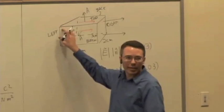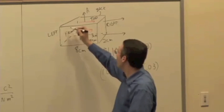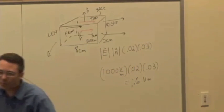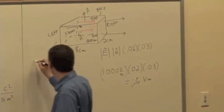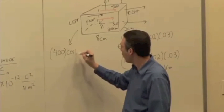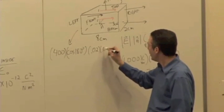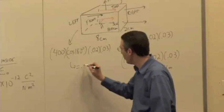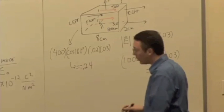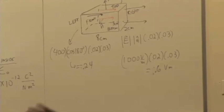What about on this side? What do you get? What's the sign? It's negative 0.24. That's coming from, what was the magnitude? 400 volts per meter. So you can do it in magnitudes: 400 volts per meter times the cosine of 180, which is negative 1, times 0.02 times 0.03 gives you negative 0.24. And so when you add those up, you get 0.36. Answer number two.